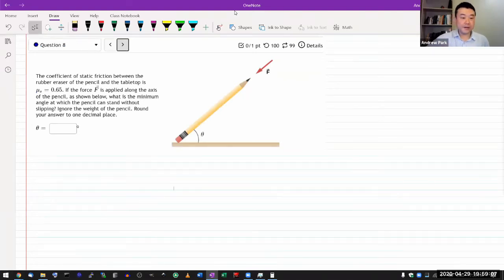Let me get on this. So it says the coefficient of static friction between the rubber eraser of the pencil and the tabletop is some given value, and then if the force F is applied along the axis of the pencil.